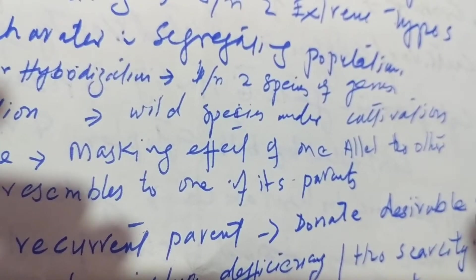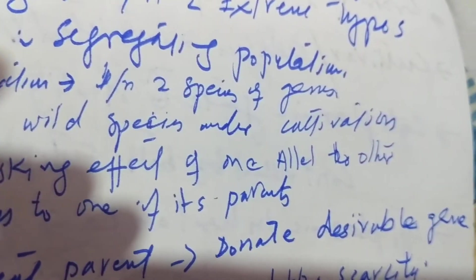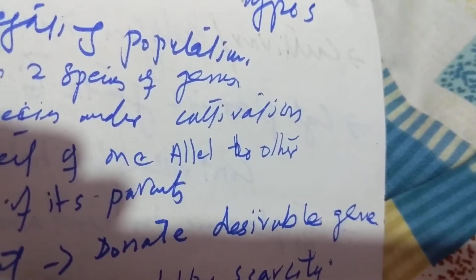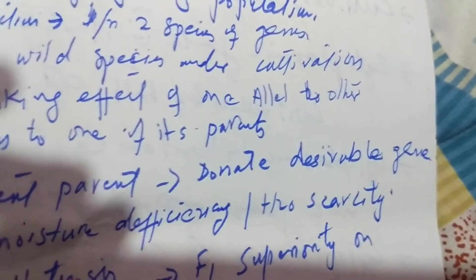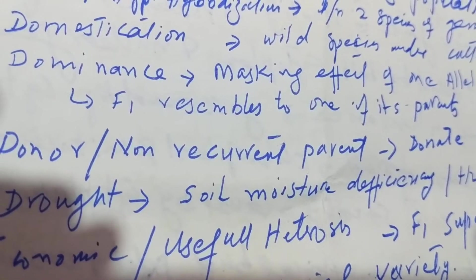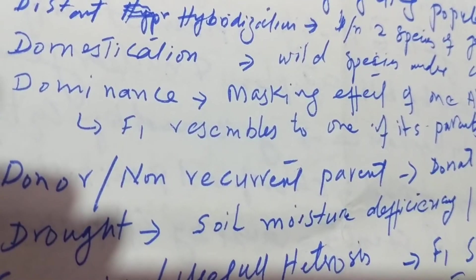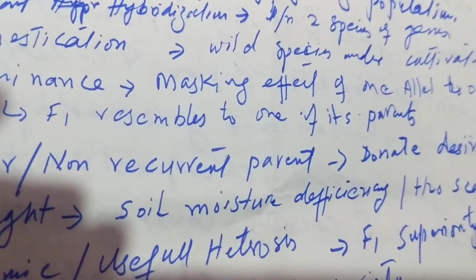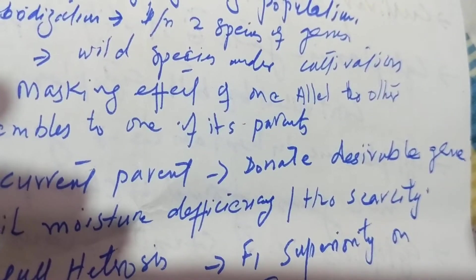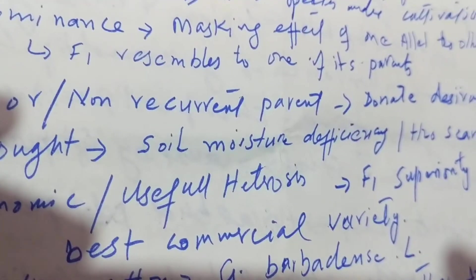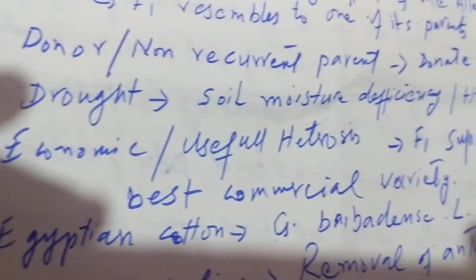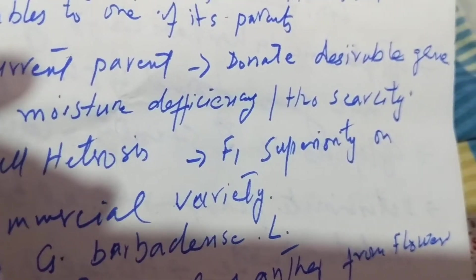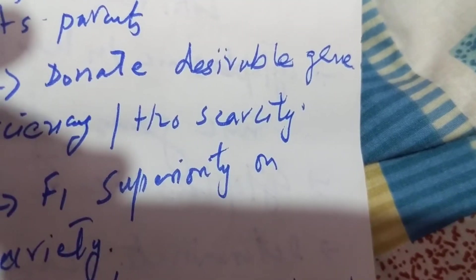Distant hybridization is between two species of a genus. Domestication is the process when a wild species comes under cultivation. Dominance is the masking effect of one allele over another, where in F1 it resembles one of its parents. Donor is the non-recurrent parent that donates desirable genes. Drought is soil moisture deficiency or water scarcity.